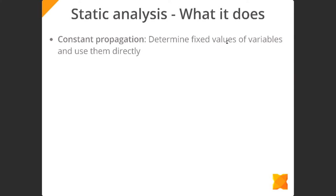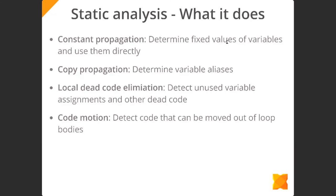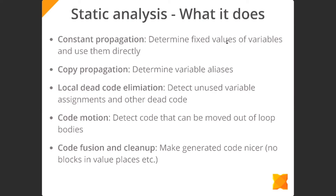What I've just shown is constant propagation — determining the fixed compile-time value of variables and using them directly. There are other things static analysis does: copy propagation, which replaces variables with other variables to help with local DCE; local dead code elimination, detecting things you simply don't need; code motion, detecting when something inside a loop could be done outside instead, reducing per-iteration cost; and simple code fusion and cleanup that makes generated code look nicer. One complaint is that we remove too many variables, which can make debugging harder on some targets — and that's a fair point we'll need to address.